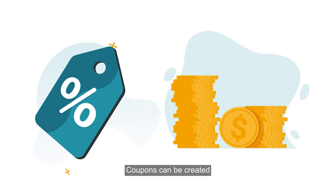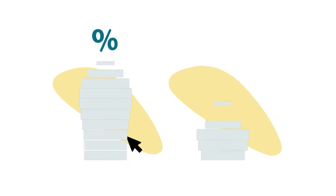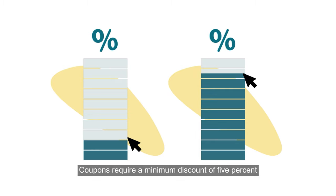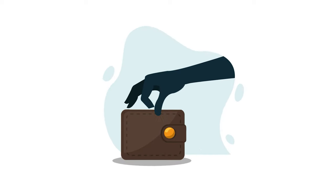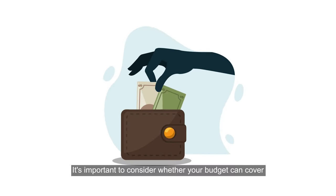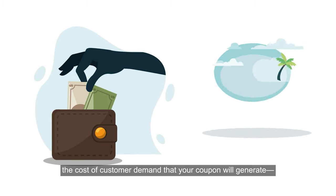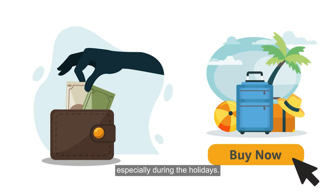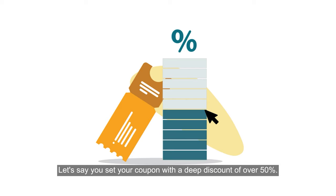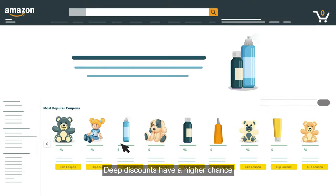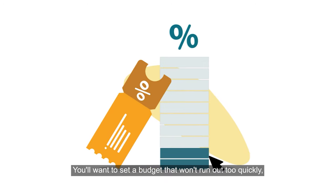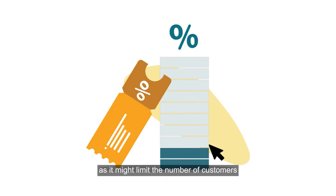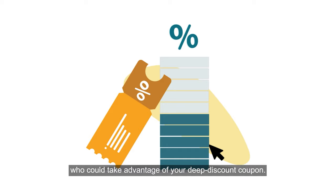Coupons can be created for either a percentage off or money off discount. Regardless of which you choose, coupons require a minimum discount of 5% and cannot exceed an 80% discount. It's important to consider whether your budget can cover the cost of customer demand your coupon will generate, especially during the holidays. If you set a deep discount of over 50%, it has a higher chance of showing up on the coupons homepage and can drive increased sales, but you'll want to set a budget that won't run out too quickly, as it might limit the number of customers who can take advantage of your coupon.